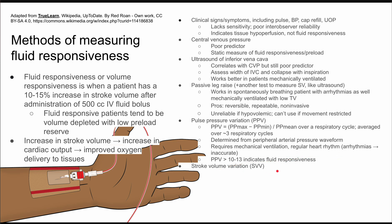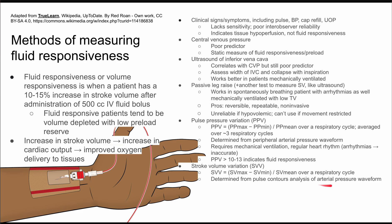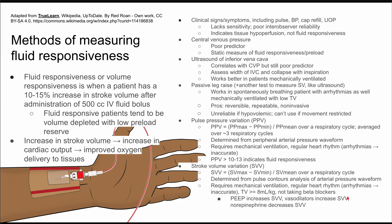The last method is stroke volume variation (SVV), calculated similarly: SV max minus SV min divided by SV mean over a respiratory cycle, derived from pulse contour analysis of an arterial pressure waveform — so an arterial line is again required. SVV also requires mechanical ventilation, a regular heart rhythm, and a tidal volume of at least 8 mL/kg. Patients should not be on beta blockers. Confounders include PEEP and vasodilators, which can increase SVV, while norepinephrine (e.g., a levophed drip) can decrease it. The threshold is similar to PPV: greater than 10 to 13 percent indicates fluid responsiveness.